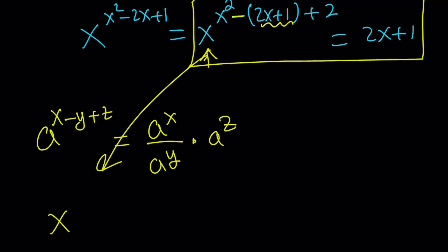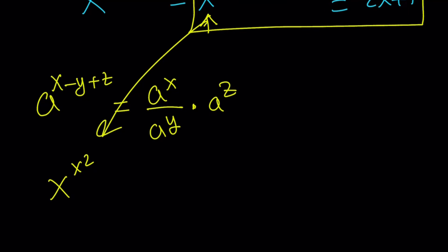we can write this as x^(x²) divided by x^(2x+1) times x². And that equals 2x+1.